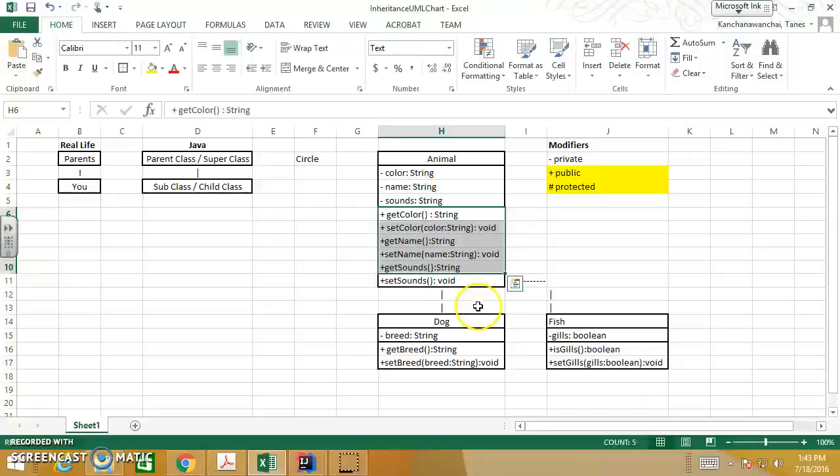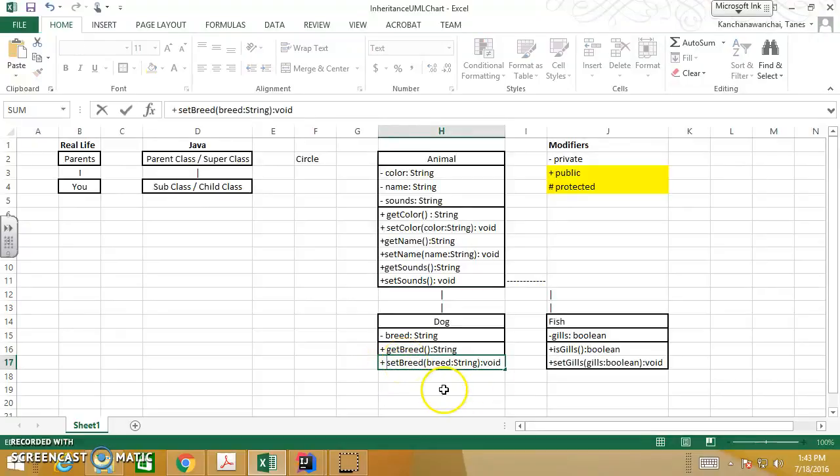For example, the way that setSound is implemented in the Animal class - if you want to make a difference, we can just create another method down here, setSound, which is going to override the parent setSound.